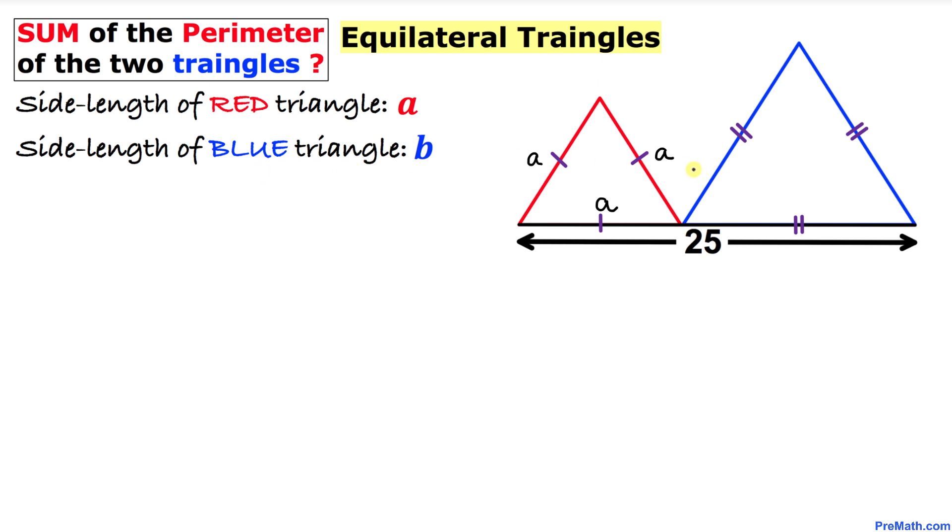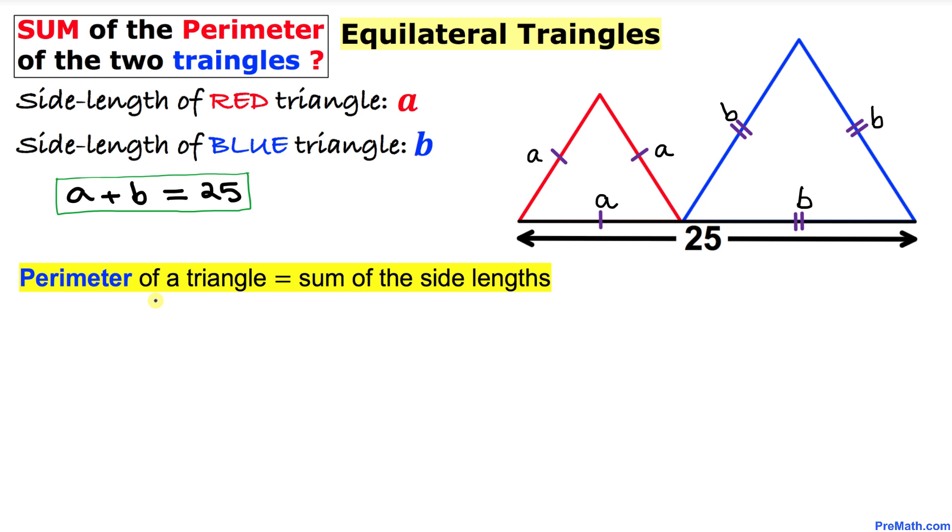And likewise the side length for this blue triangle, let's suppose it's b. So I'm going to put down this side is b, this side is b, and this side is lowercase b as well. Then we can see that this total length is going to be equal to the sum of a plus b. So therefore we can write a plus b equals 25. And now let's recall the perimeter of a triangle.